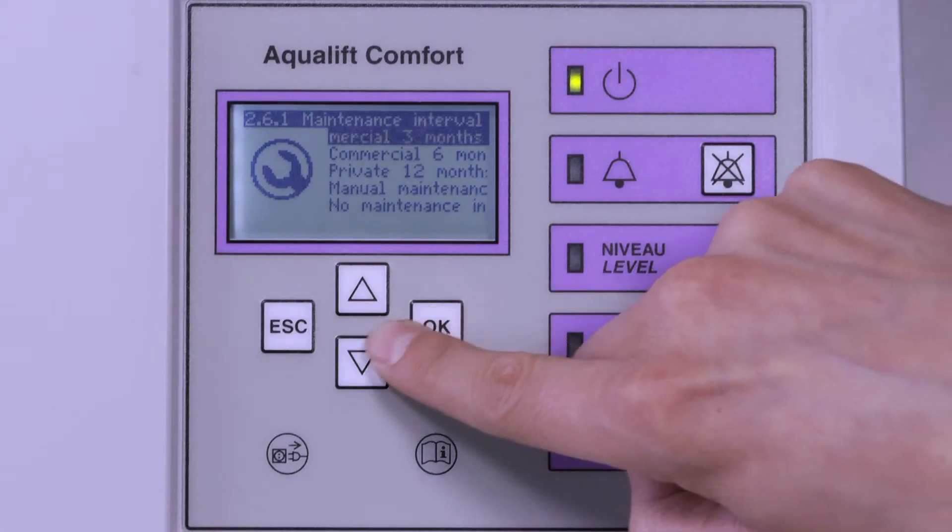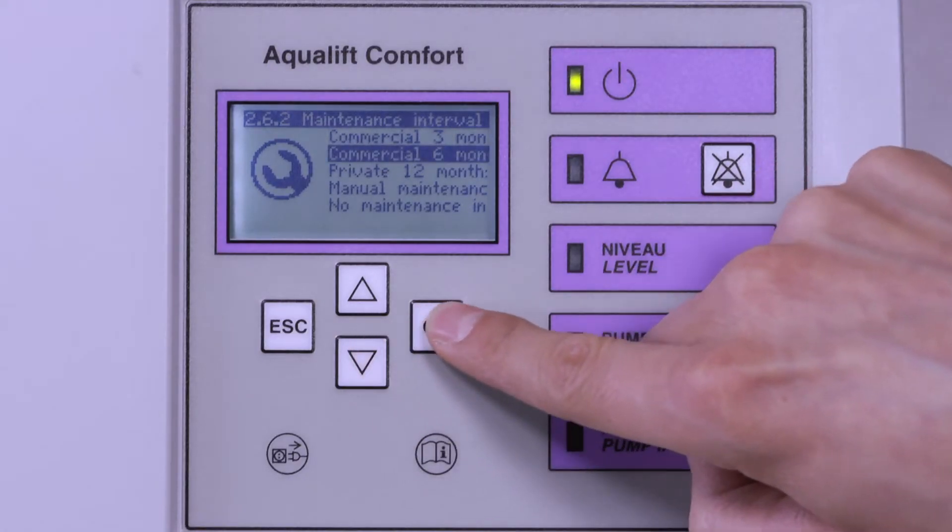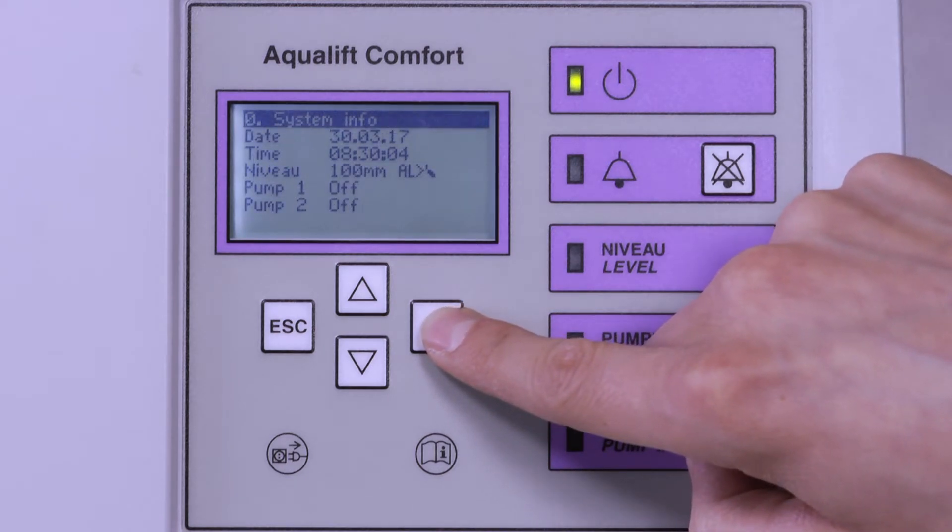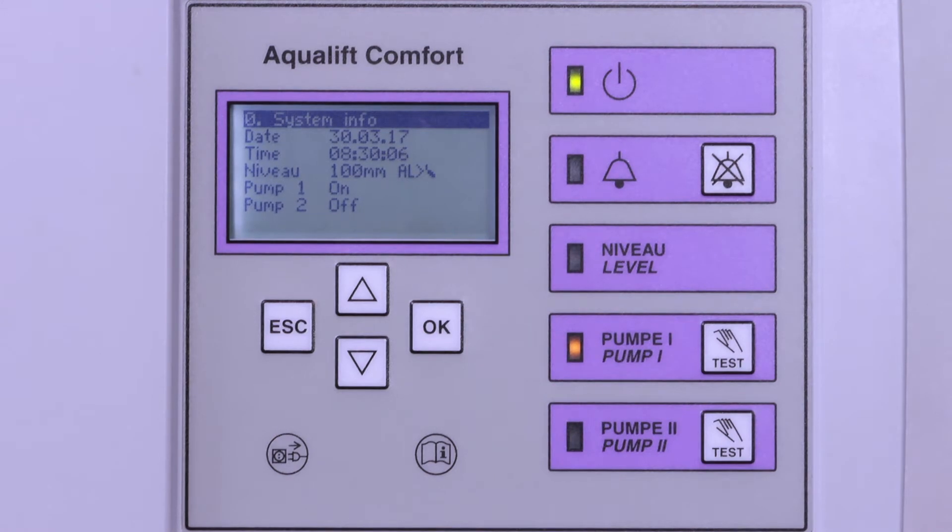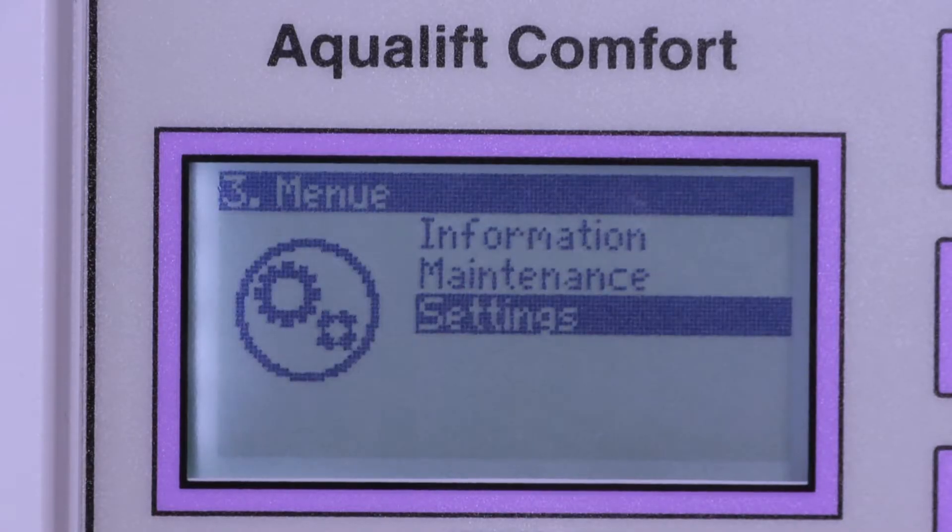After selecting the appropriate maintenance interval, the system performs an initial function test. Note that the preset values must always be adapted to the local conditions. To set the control unit to compressor operation,